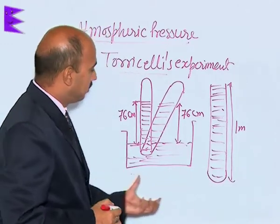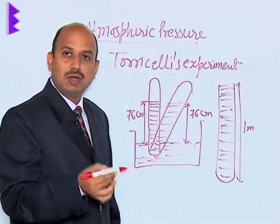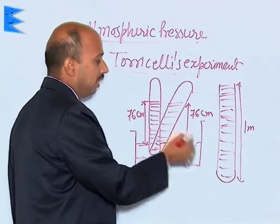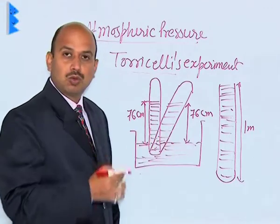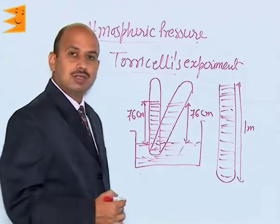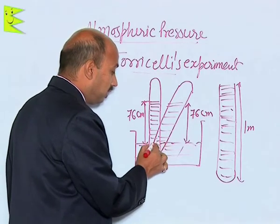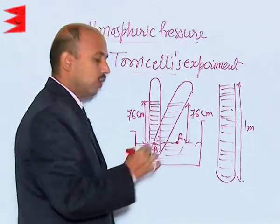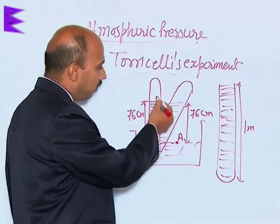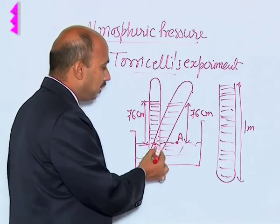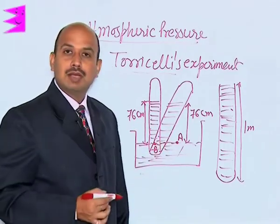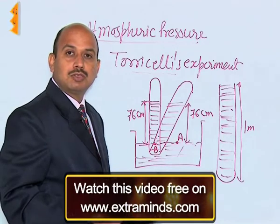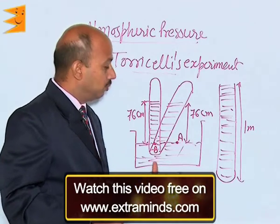When this tube is inverted and placed in the beaker, the mercury level in the tube goes down — meaning part of the mercury goes to the beaker side — in such a way that the pressure at point A and B becomes equal. The mercury level falls until the pressure at A and B are equal, because according to Pascal's law, A and B are at the same level, so the pressure should be the same at both points.